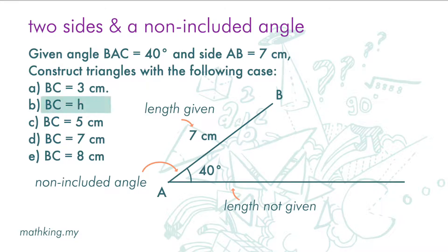If BC is H, which is the height of the triangle. Even though this angle ABC is not specified, we still get only one triangle.